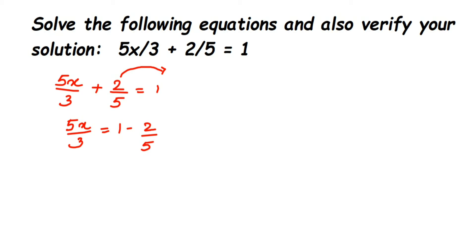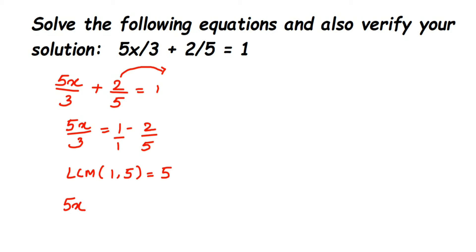Now 1 is a whole number and 2 by 5 is a fraction. I'm going to write 1 as 1 upon 1 to show it in the form of a fraction. When subtracting two fractions, the denominators have to be the same. Here the first number has denominator 1 and the second has denominator 5, so we're going to take the LCM of 1 and 5, which is 5, to make the denominators the same.